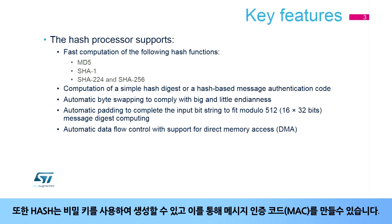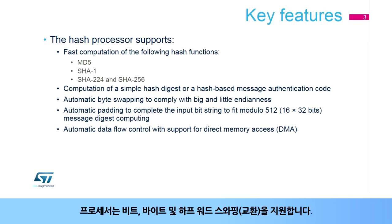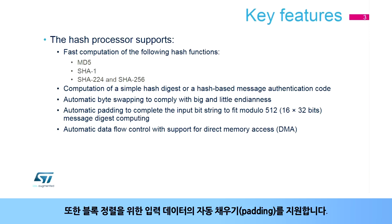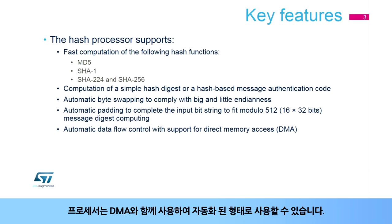A hash can also be generated with a secret key to produce a message authentication code, or MAC. The processor supports bit, byte, and half-word swapping. It also supports automatic padding of input data for block alignment. The processor can be used in conjunction with the DMA for automatic processor feeding.